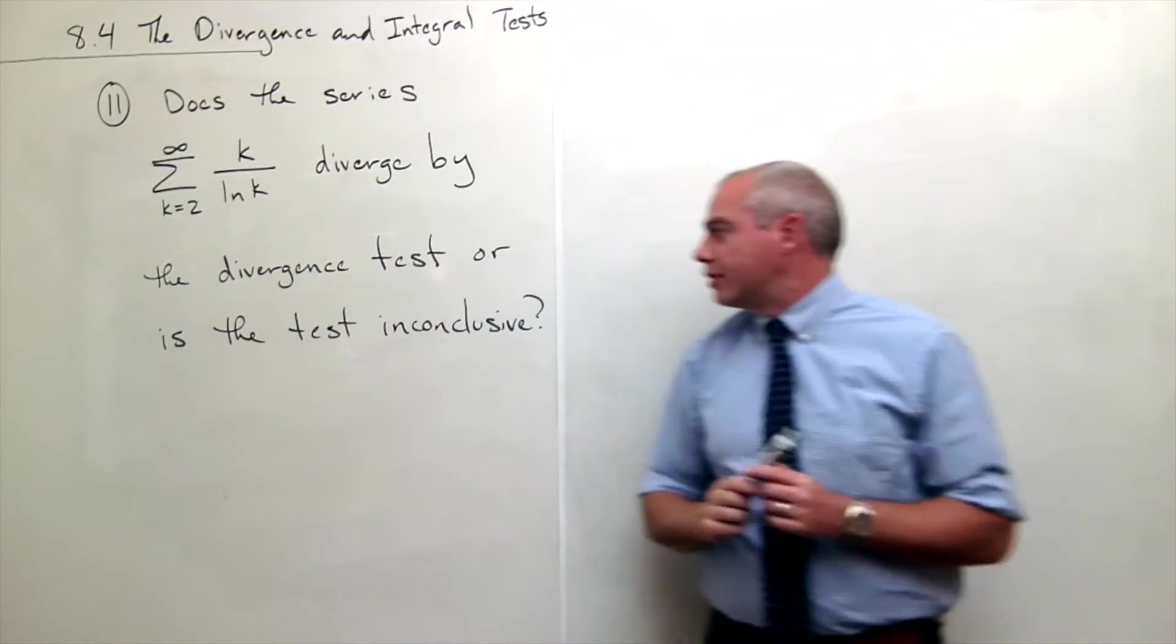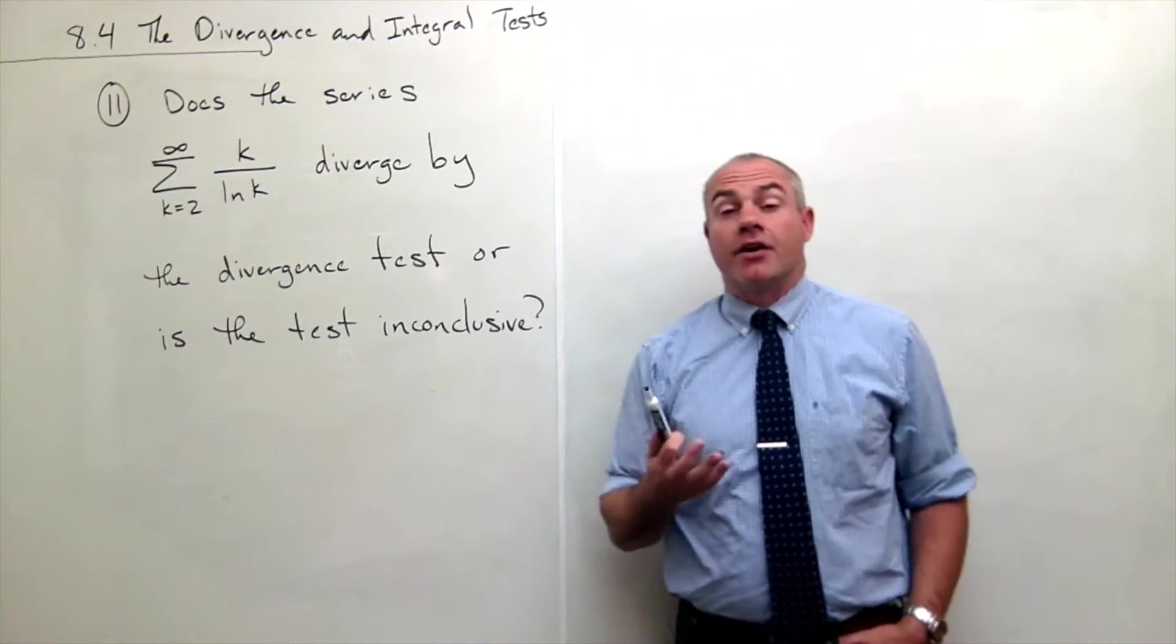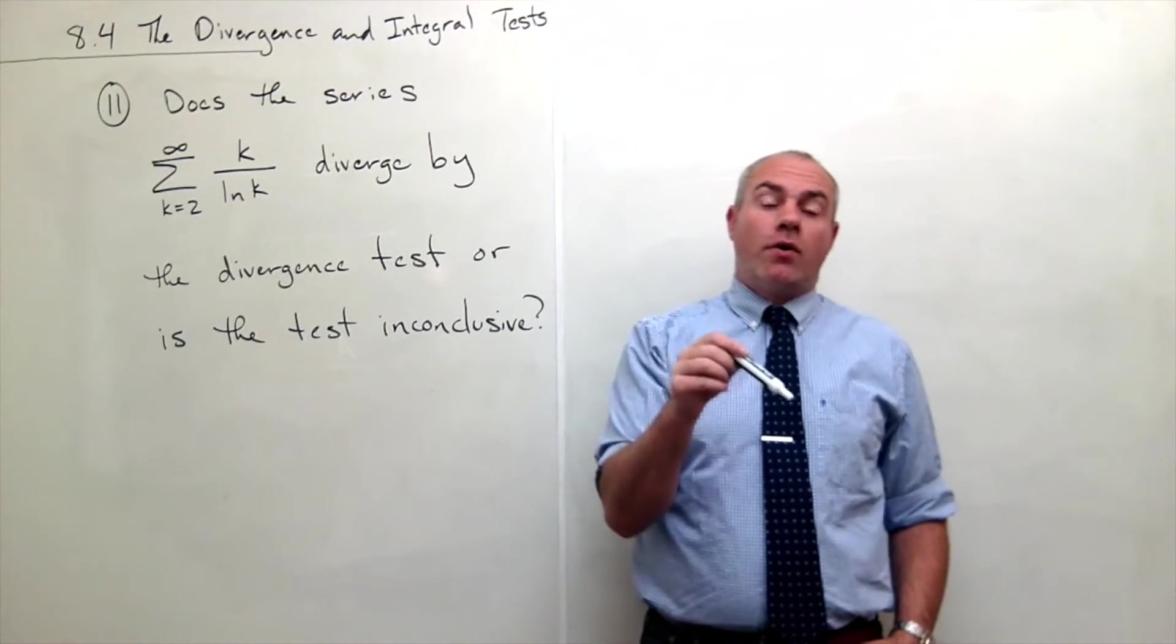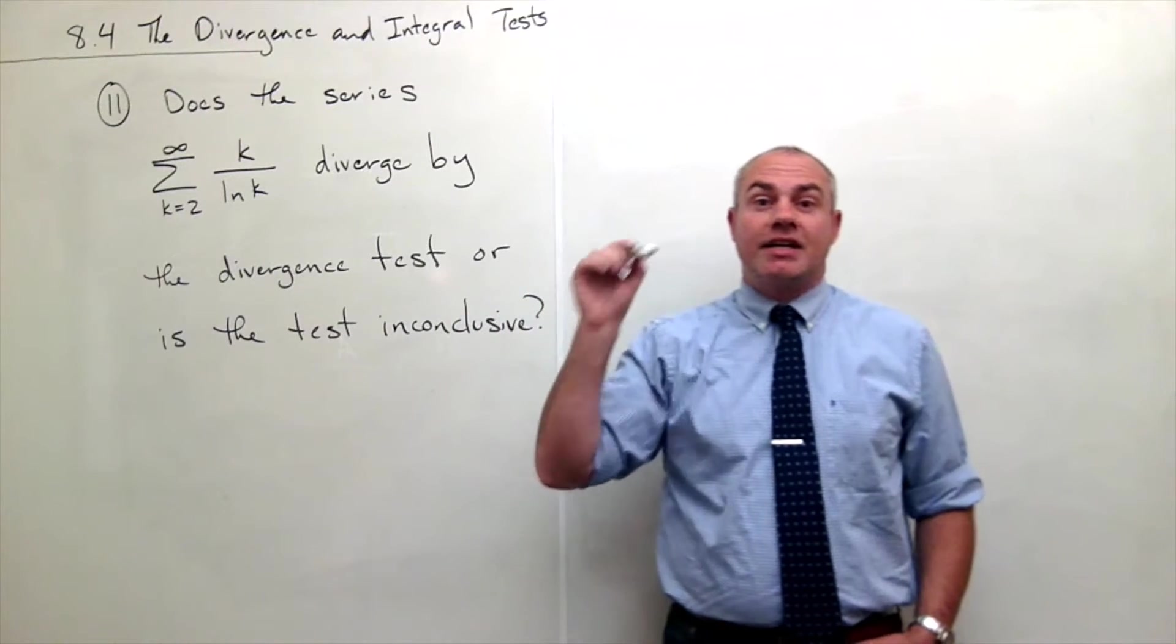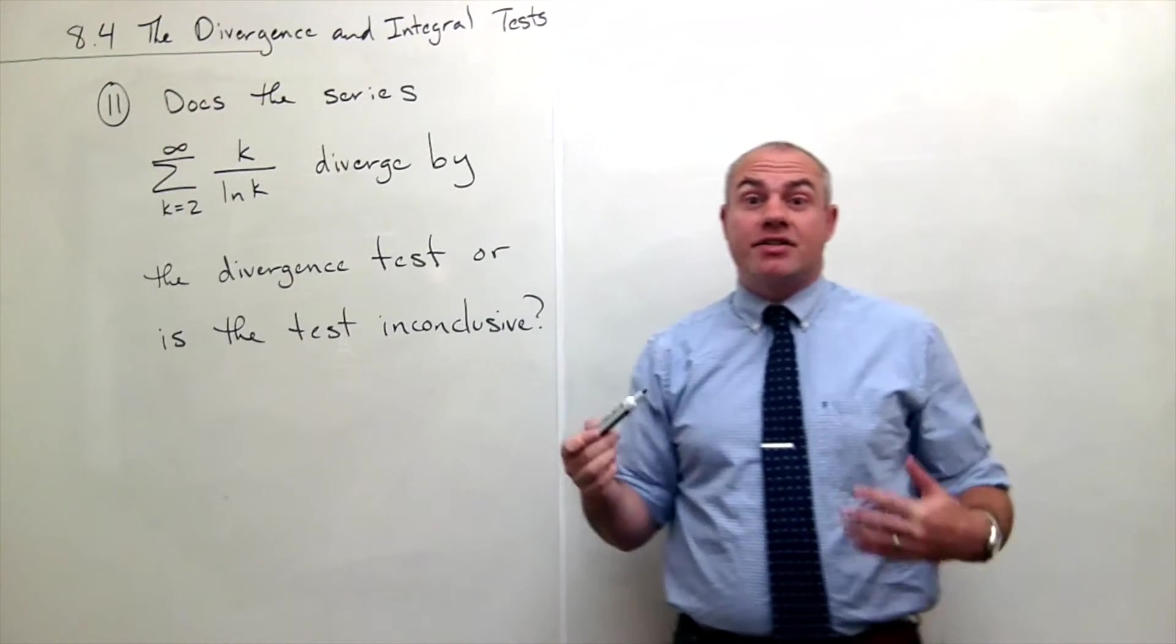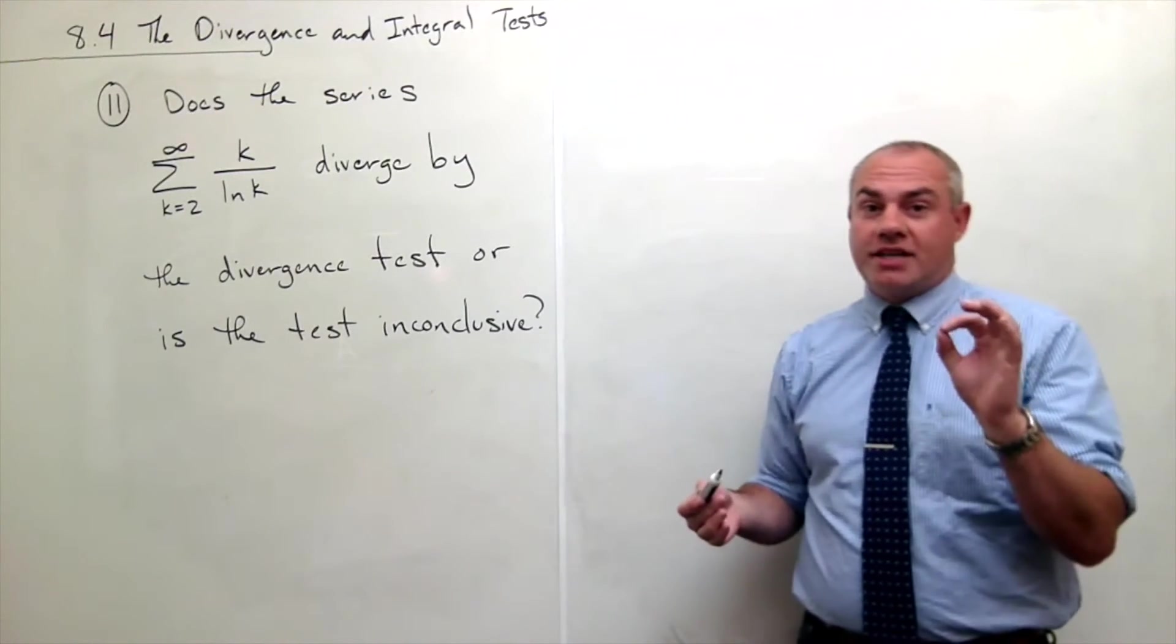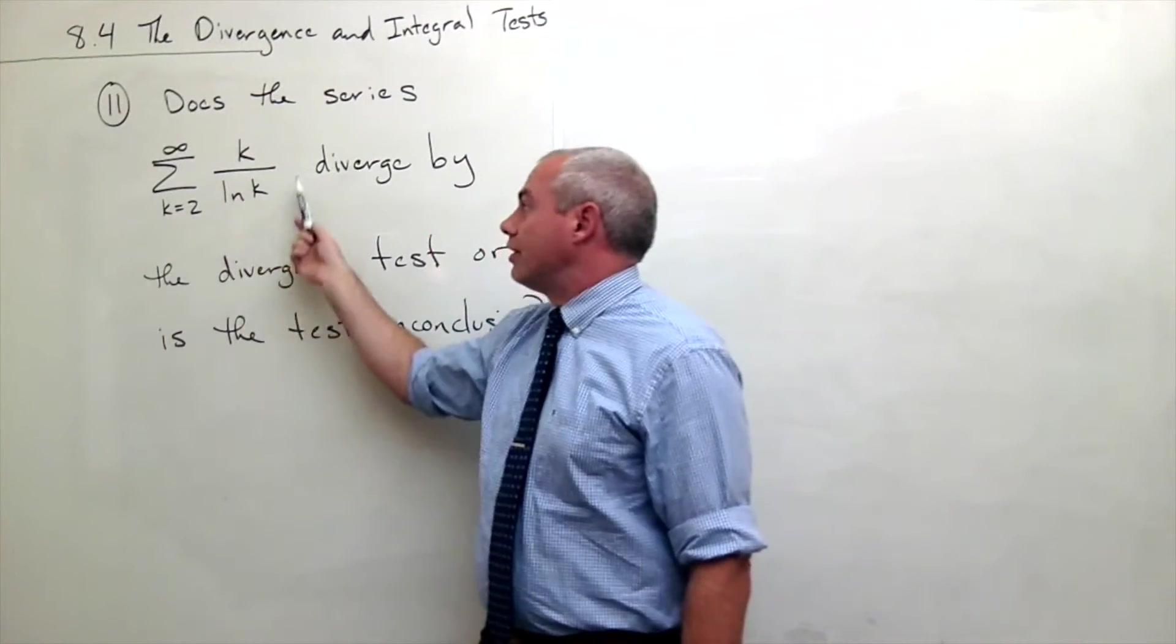diverge by the divergence test, or is the test inconclusive? Remember that the divergence test can only show us if a series diverges—it can never tell us that a series converges. That's why it's called the divergence test; it only tests for divergence. So we're going to use the divergence test on this series.